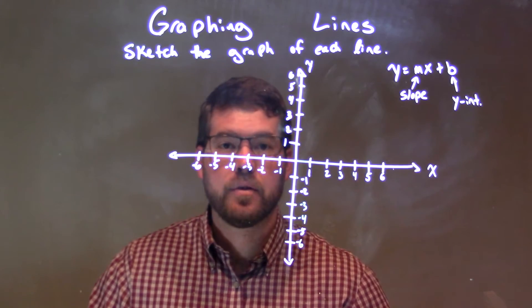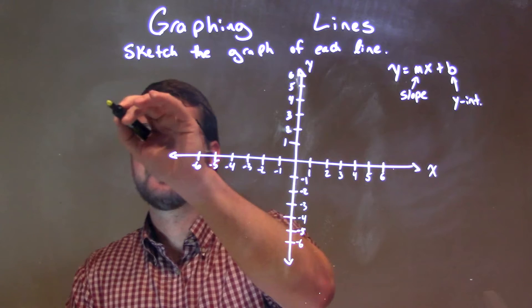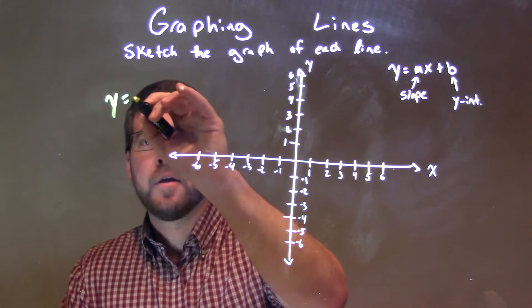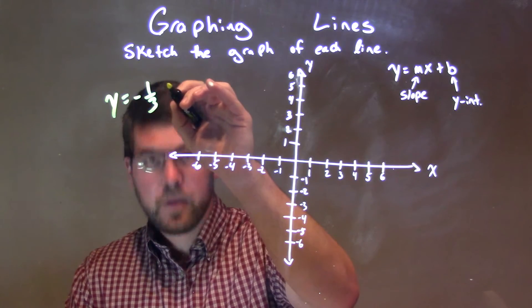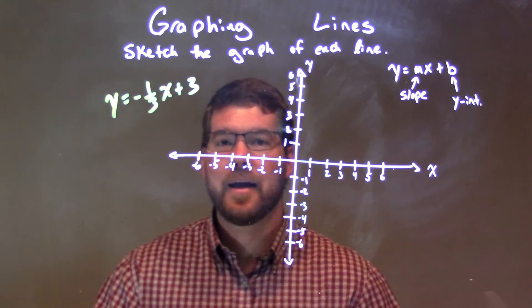Let's sketch the graph of each line. If I was given this equation, y equals negative one-third x plus three. Alright, we've got negative one-third x plus three.